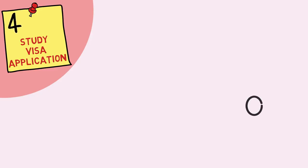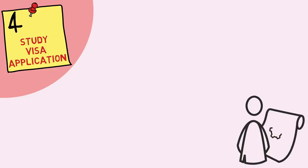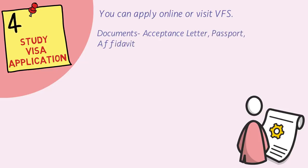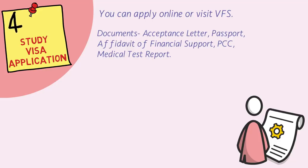The fourth and last step is the study visa application. You need to apply for a study permit to come to Canada. You can apply online or through your VFS office in your city. The required documents include: your acceptance letter, your passport, an affidavit of financial support, a PCC (Police Clearance Certificate), and your medical test report. There may be a couple of other documents required as well. The fee for the study permit is $150 CAD.